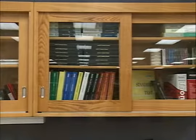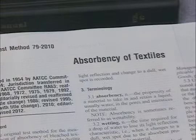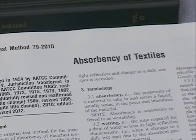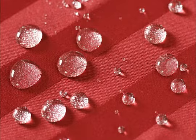Test Method 79, absorbency of textiles, has been widely used since 1954 as a key quantifier of successful textile fabric preparation, dyeing, and finishing. It's often referred to as the water drop test.